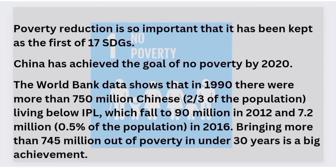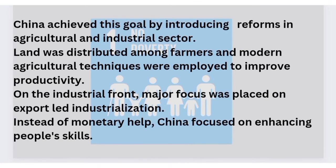Most interestingly, China lifted 100 million people out of poverty in just 8 years, from 2012 to 2020. According to World Bank data, in 1990 approximately 750 million people in China were living below the poverty line — in extreme poverty. By 2012, that number had reduced to just 90 million, and by 2016, it further reduced to only 7.2 million.